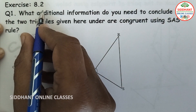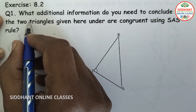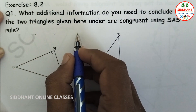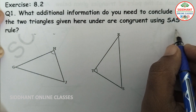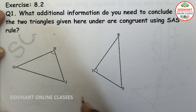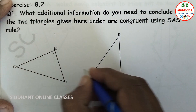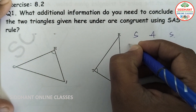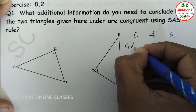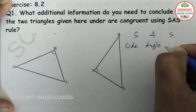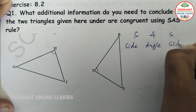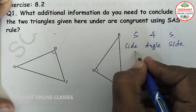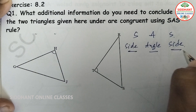Exercise 8.2, Question number 1: What additional information do you need to conclude that the two triangles are congruent using the SAS rule? The SAS rule means side, angle, and side. So we need information about a side, an angle, and another side.